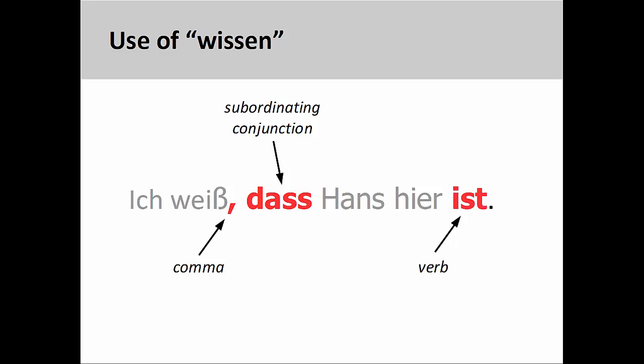A good tip to know is that the verb Wissen often launches a subordinate clause. A subordinate clause begins with a subordinating conjunction and is set off from the lead sentence by a comma. The verb always comes at the end of the clause. We will discuss subordinate clauses in a later presentation.